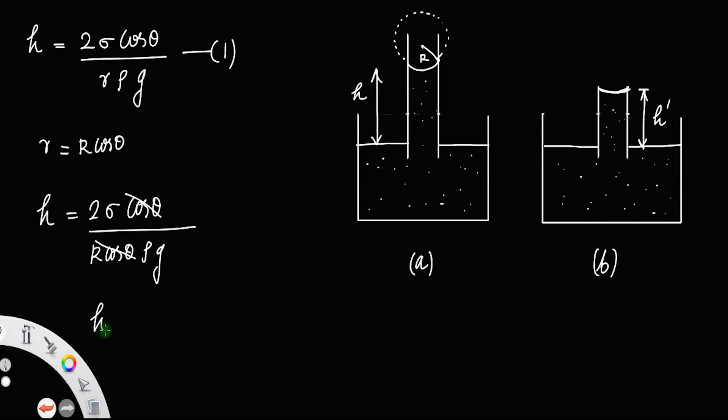If you move h to the left side, h times r equals 2σ divided by ρg.